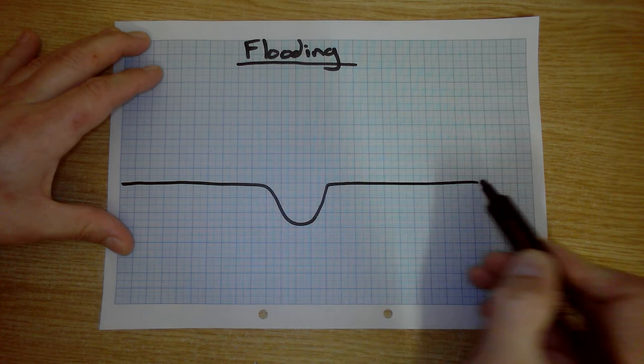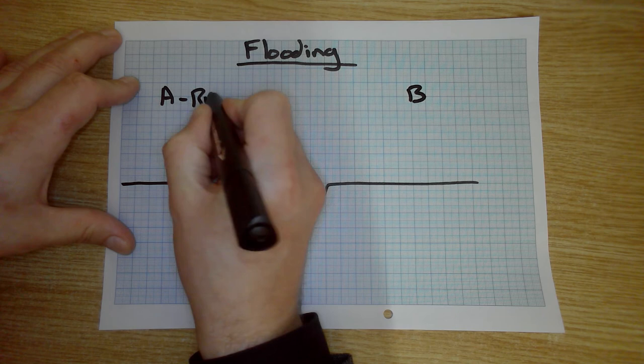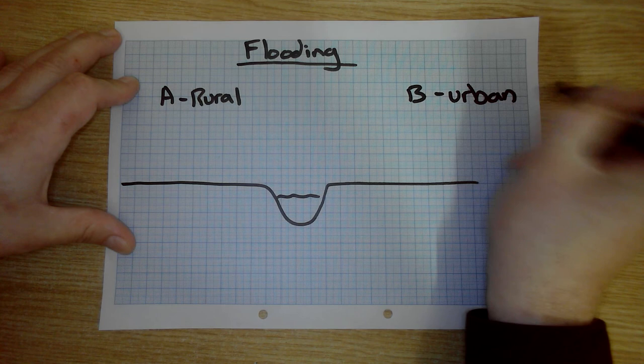If we imagine we have got the river in the middle here, we've got a wide flat valley either side. Now if we have area A, area B. So area A we imagine is rural, area B is urban.